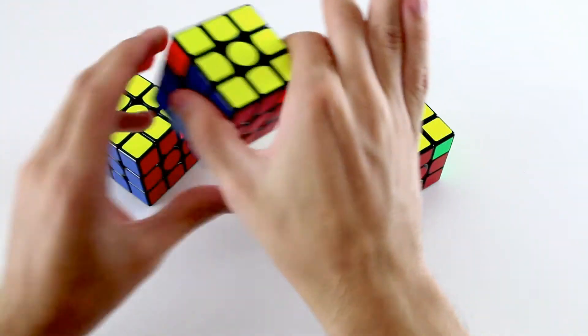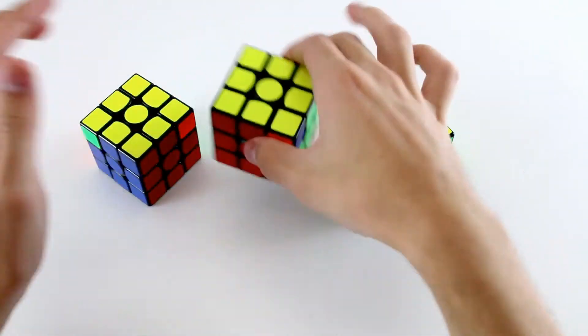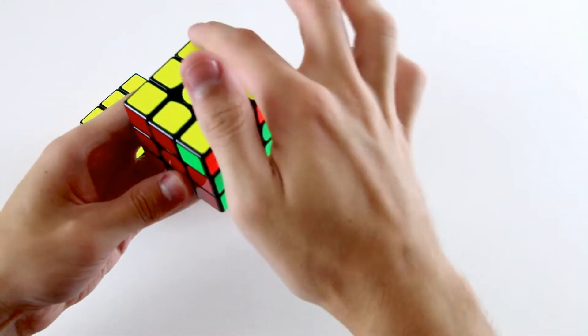Or you have one of the two A permutations where the edges are completely solved and you just need to cycle three corners, like in those two cases.